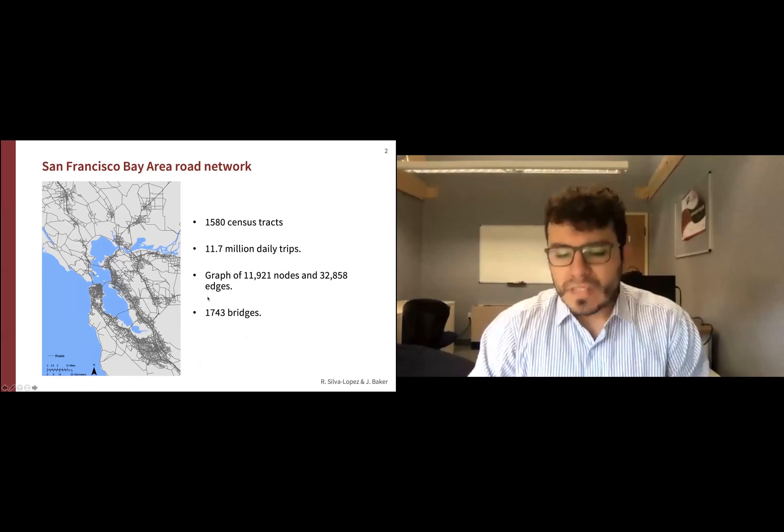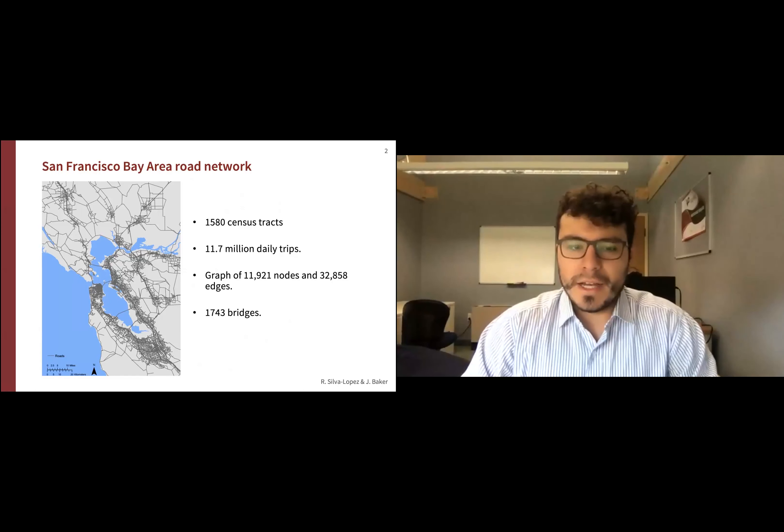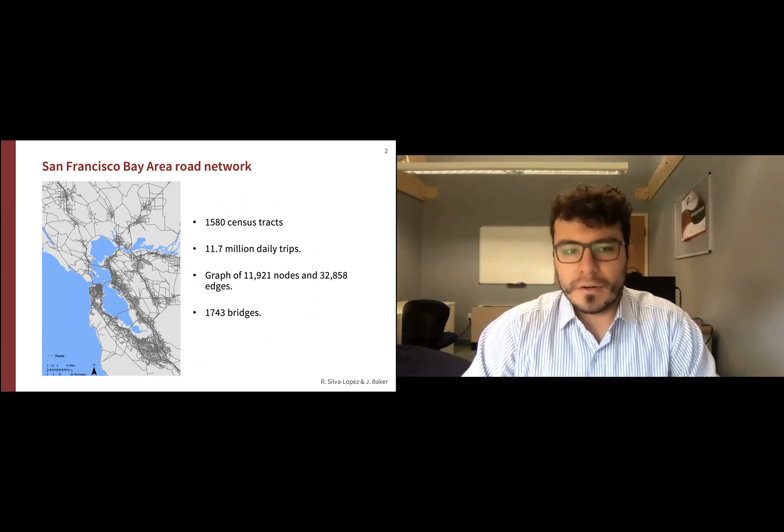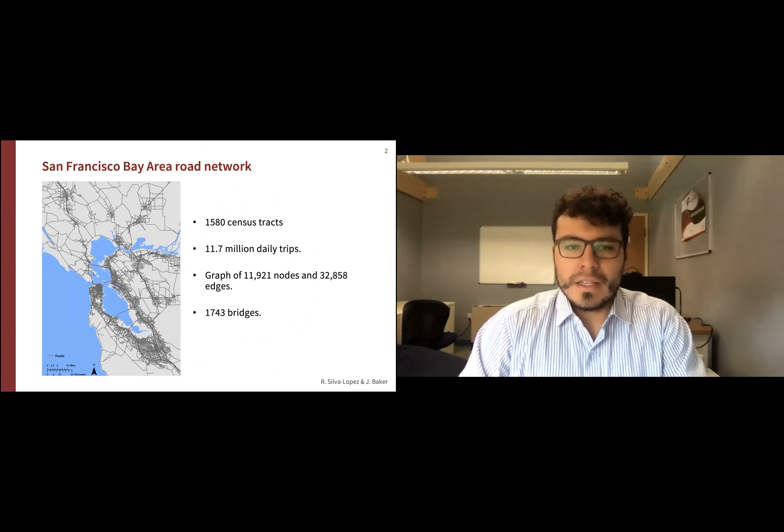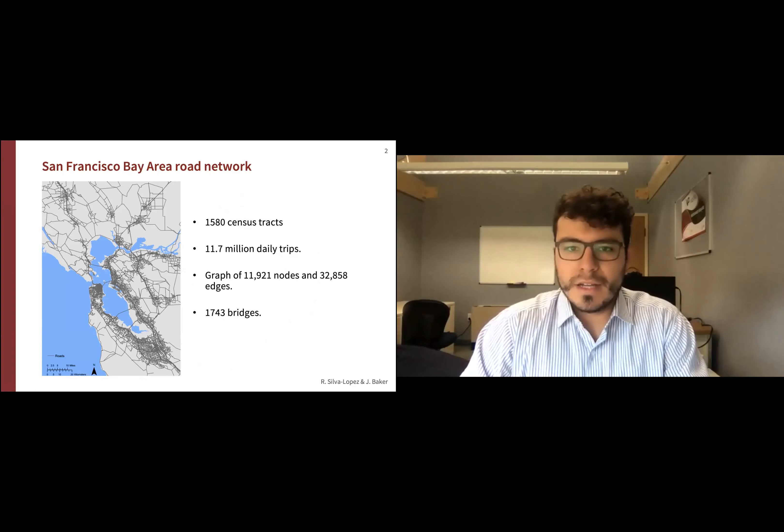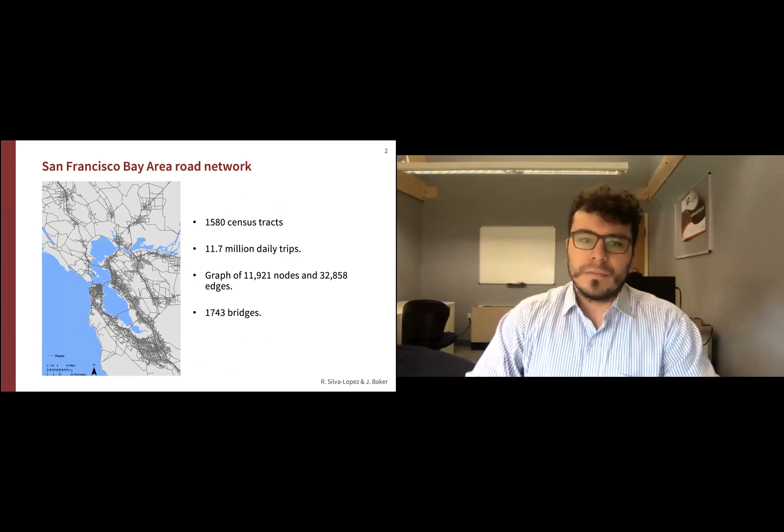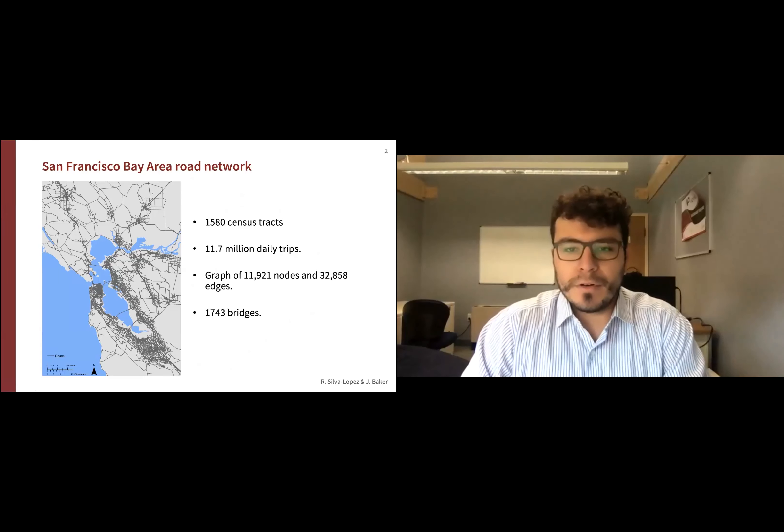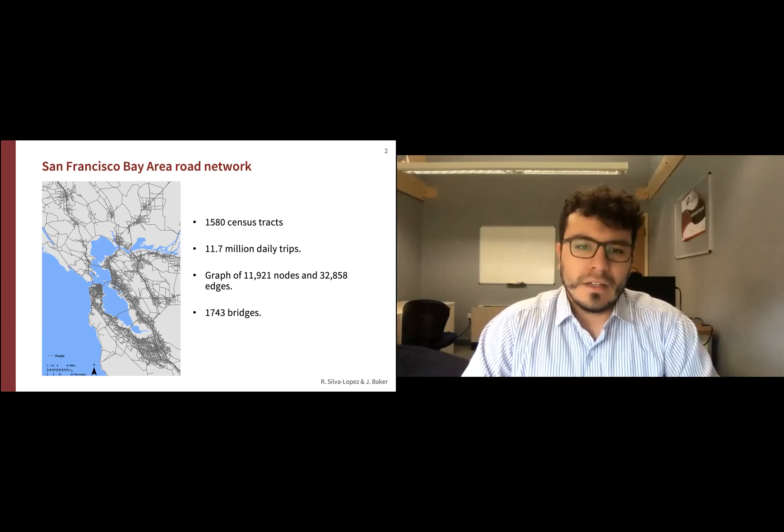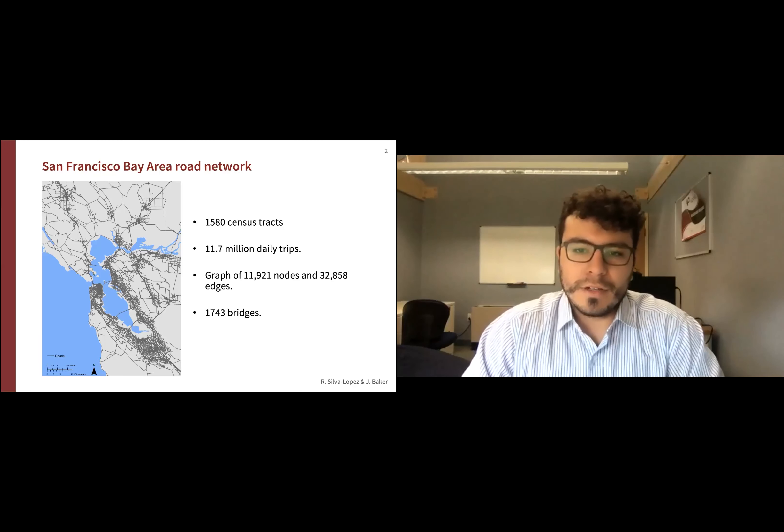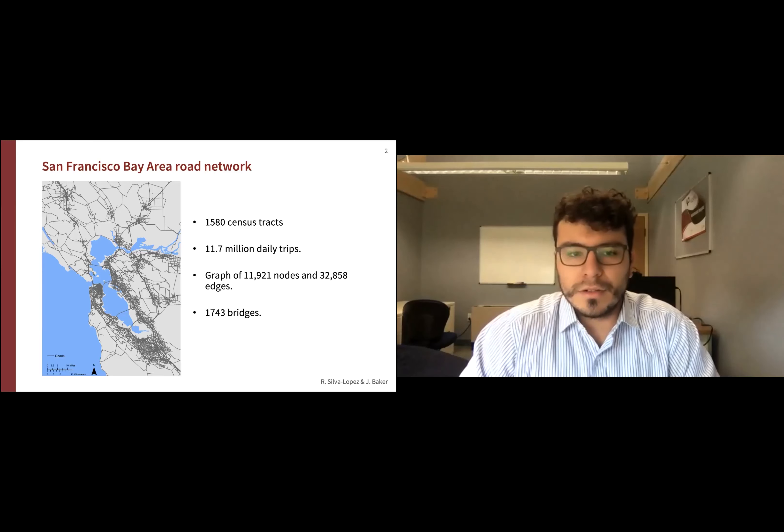Before getting started, I want to invite you to reflect a little bit about how complex road networks can be. To illustrate that, let's look at the San Francisco model we're using for our research. The Bay Area comprises almost 1,600 census tracts. On a daily basis, 12 million trips are performed. Our model represents the road network through a graph of 11,920 nodes and 32,858 edges. It also includes 1,743 bridges managed by Caltrans that are vulnerable components that can collapse or experience damage.